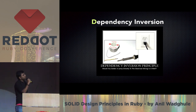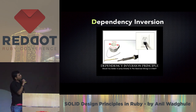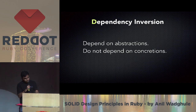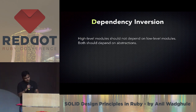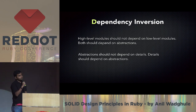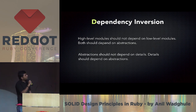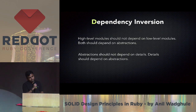The last principle is Dependency Inversion. As the image shows, instead of connecting a wire directly we use a switch and a plug. The principle says: depend on abstraction, do not depend on concretions. High-level models should not depend on low-level models — both should depend on abstractions. Abstractions should not depend on details; details should depend on abstractions.